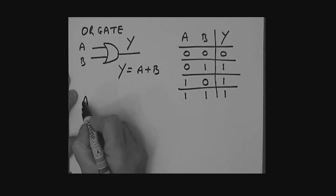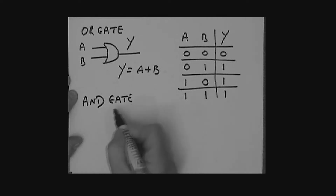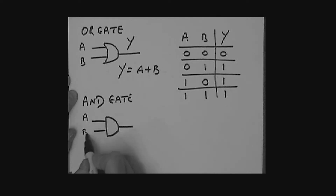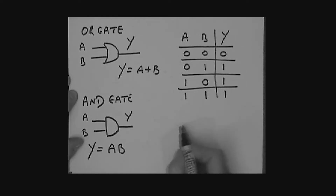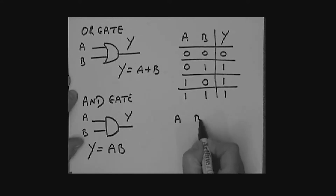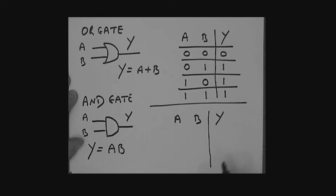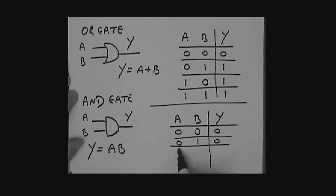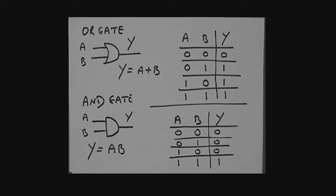Now let's look at an AND gate. Here is the symbol for the two-input AND gate with inputs A and B and output Y. Y is equal to A ANDed with B. Truth table: if A is 0 and B is 0, the output is 0. If A is 0 and B is 1, the output is 0. If A is 1 and B is 0, the output is 1. That is our AND gate.